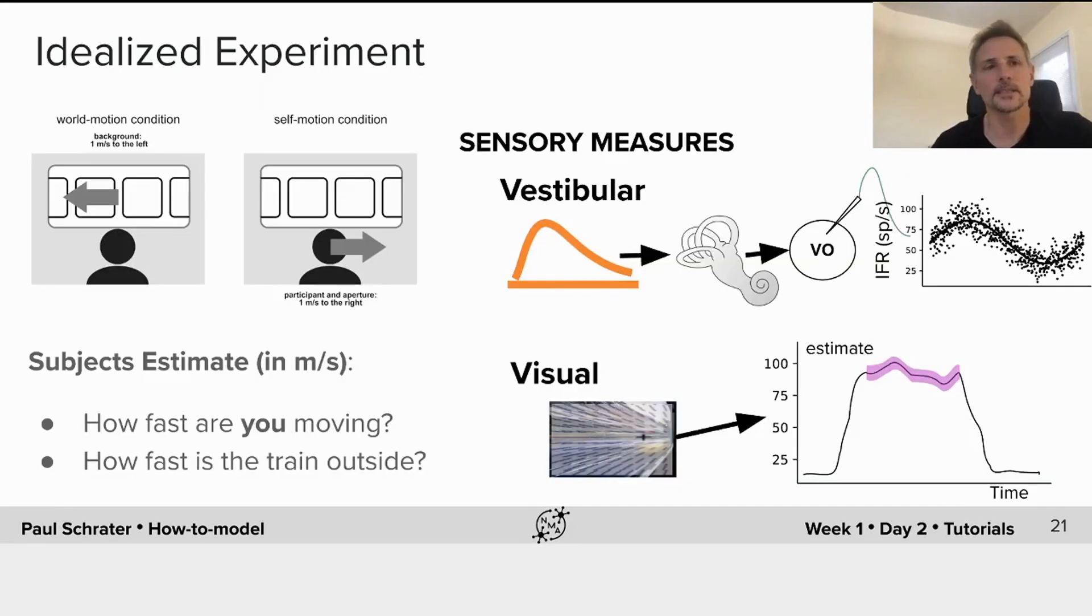One of the most important things to consider when you're gathering background is what are the inputs and what are the outputs to the system? In our perceptual experiment, the inputs come from our senses, and there are two senses that are particularly important. The vestibular system transduces self motion.